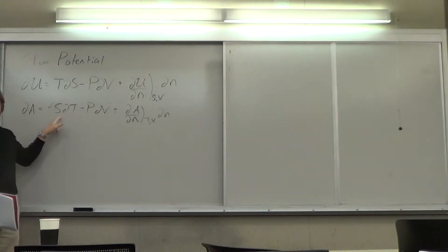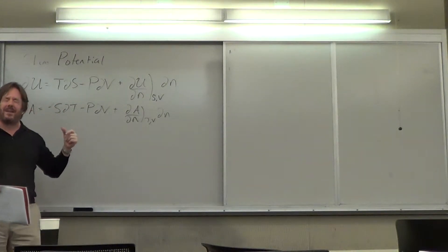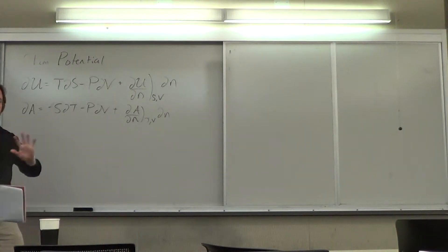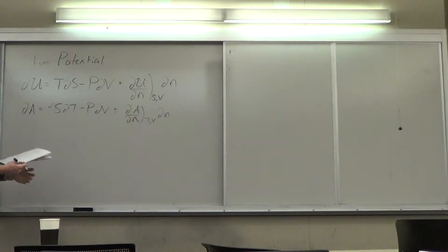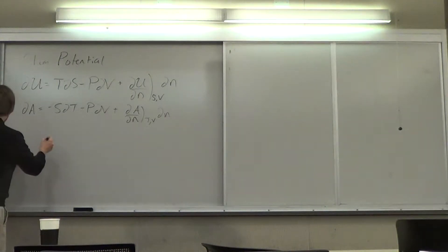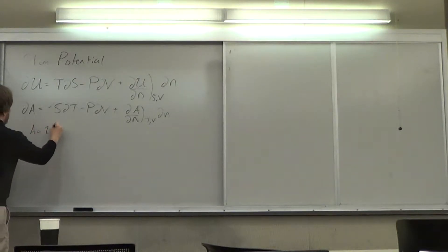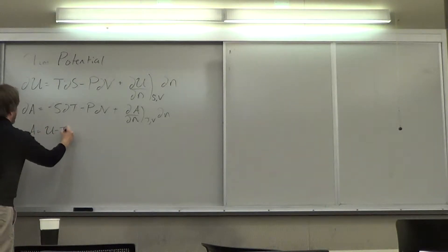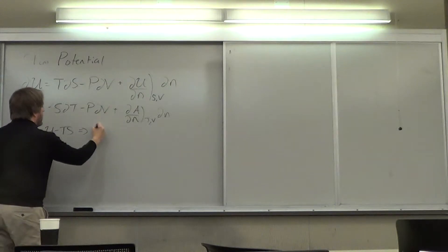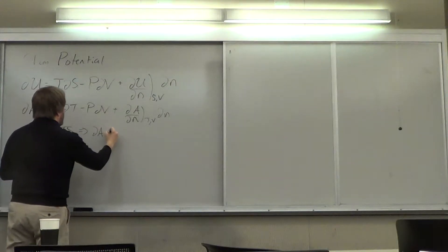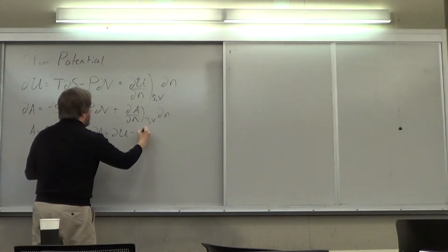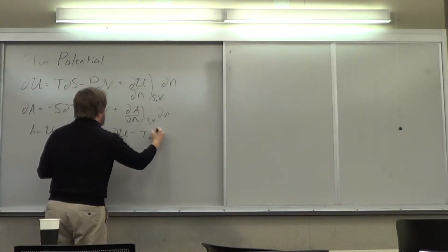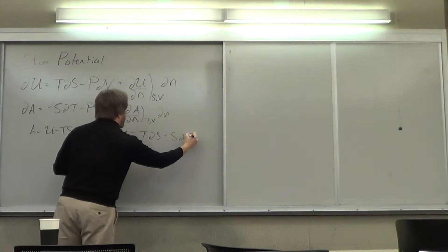Let me give the plan: we'll do chemical potential, then grand canonical, then solve PV equals nRT. Now, A is U minus TS, and therefore the change in A equals the change in U minus T times the change in S minus S times the change in T — I just used the product rule.